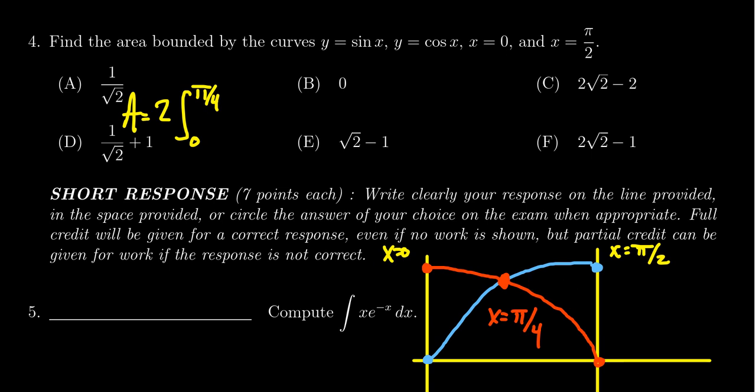But for the first region, cosine is the one on top, and sine is the one on the bottom. So as we integrate this, an antiderivative of cosine would be sine of x. The antiderivative of negative sine is a positive cosine.